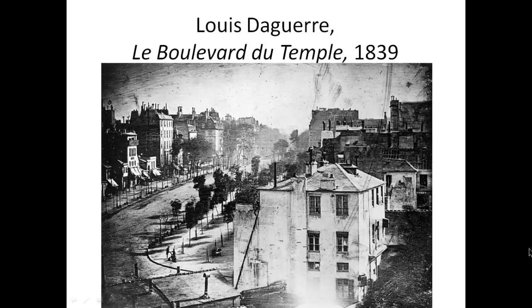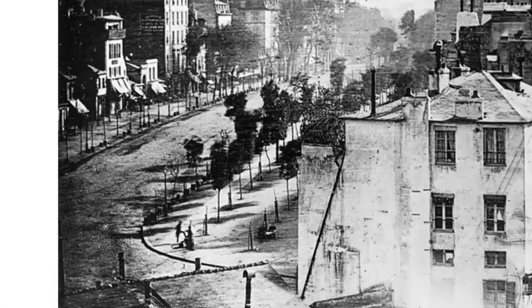This photograph by Louis Daguerre was one of the first photographic images ever taken. Although it looks like an empty street scene, it was actually a busy day with horses and carts rushing up and down the avenue. Because the metal plate upon which this image was captured took so long to process — we are talking hours here — it could not capture moving objects.